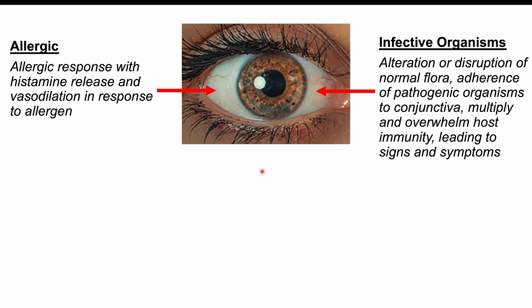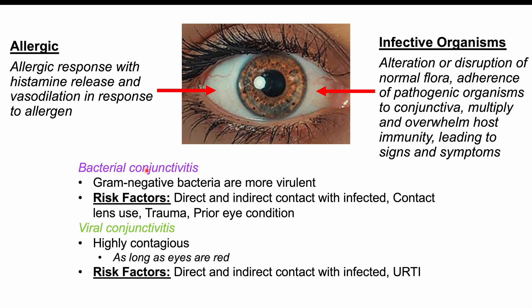In bacterial conjunctivitis specifically, infection with gram-negative bacteria tends to produce a more virulent or severe condition. Gram-negative bacteria include Chlamydia trachomatis, Neisseria gonorrhoeae, and Moraxella catarrhalis. Risk factors for bacterial conjunctivitis include direct and indirect contact with an infected individual — indirect contact occurs when someone touches contaminated objects then touches their eyes. Contact lens use is another risk factor, as is prior trauma or a prior eye condition.